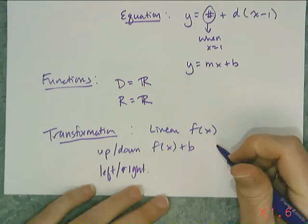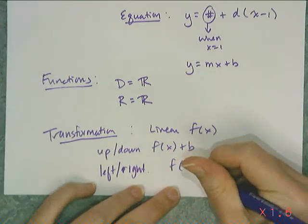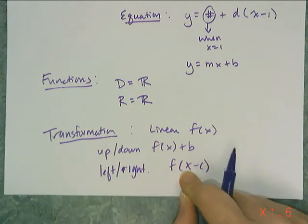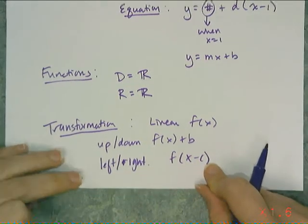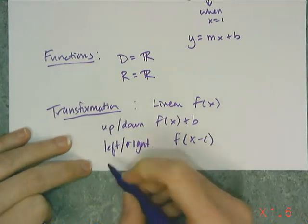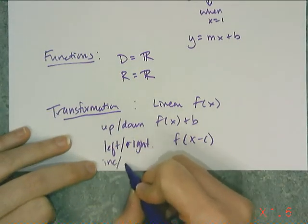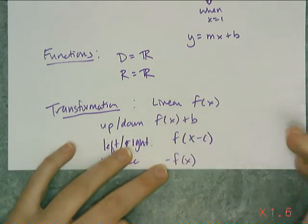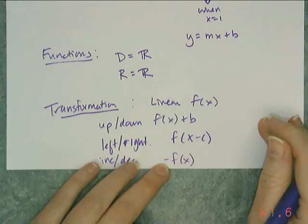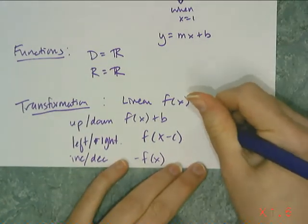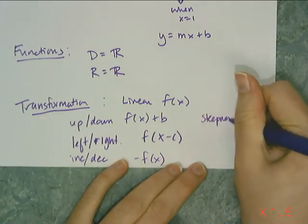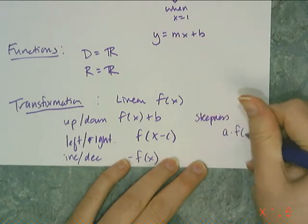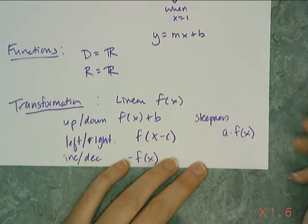Then I had the left or right translation. To move a graph left or right, I had to add or subtract something inside the rule, so I'd have to replace the x with x plus something or x minus something. If I wanted to change it from increasing to decreasing or vice versa, I would multiply the rule by a negative number. And finally, if I wanted to change the steepness of the function, I had to multiply the function rule by some non-zero constant.